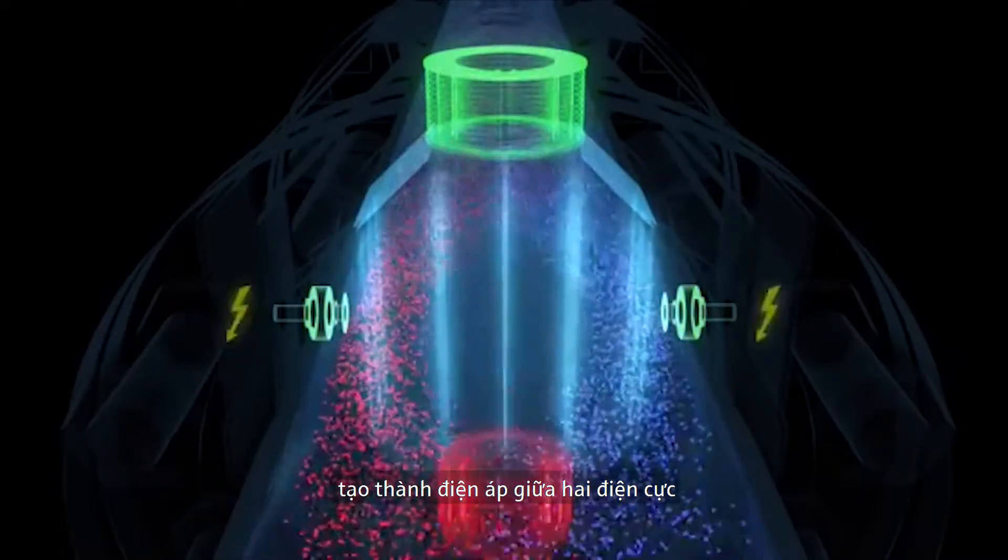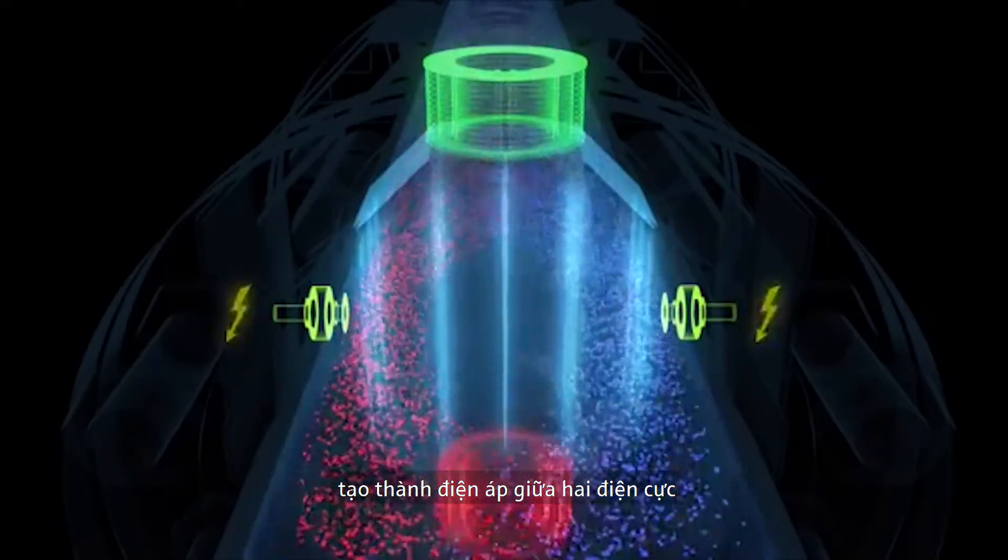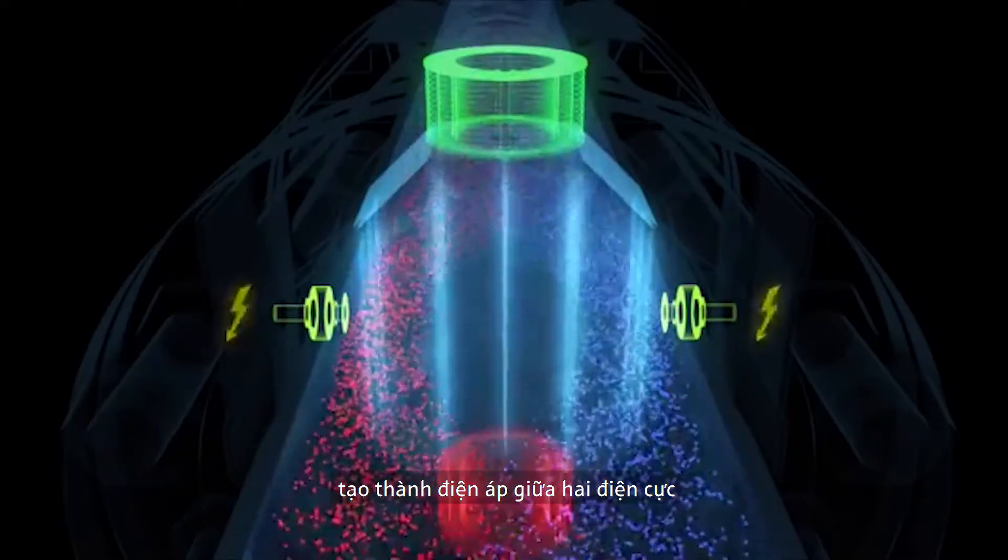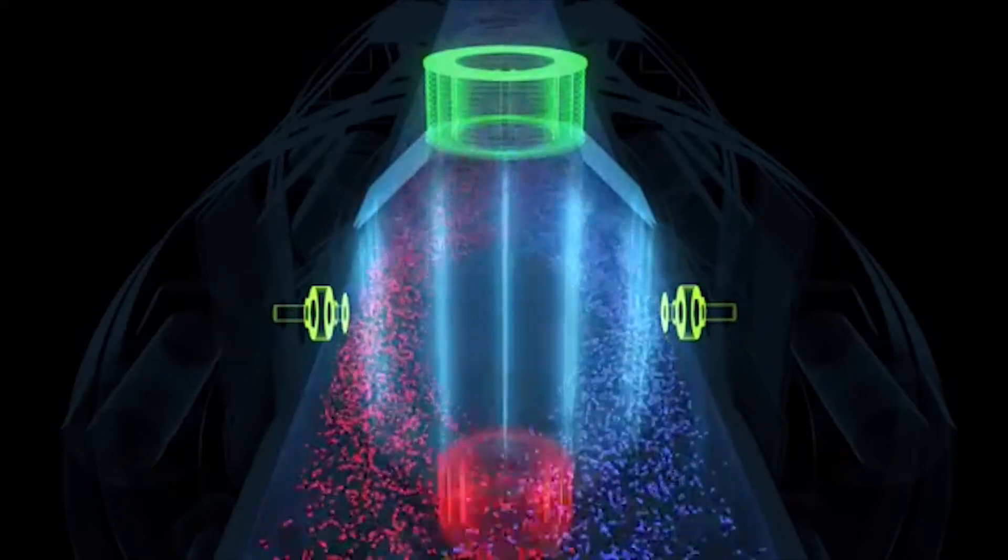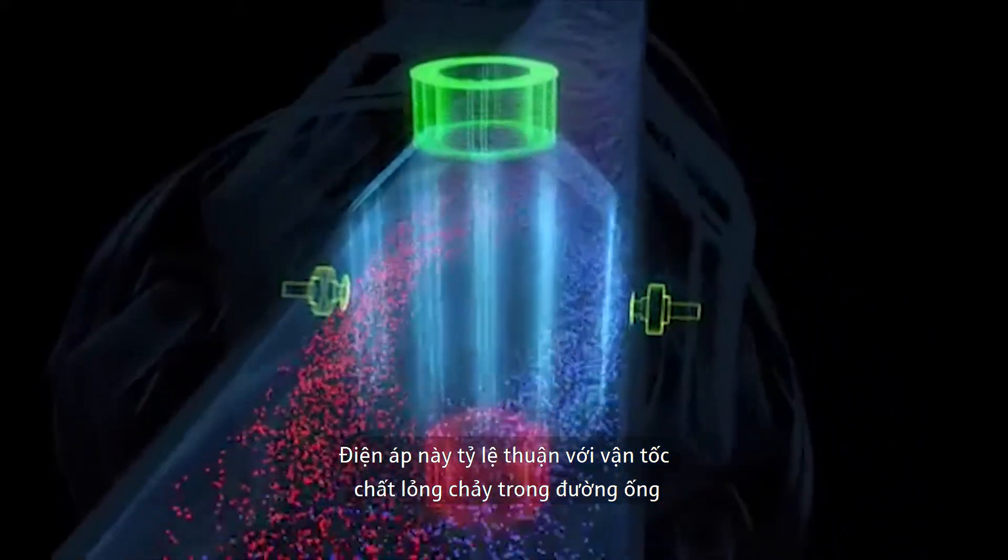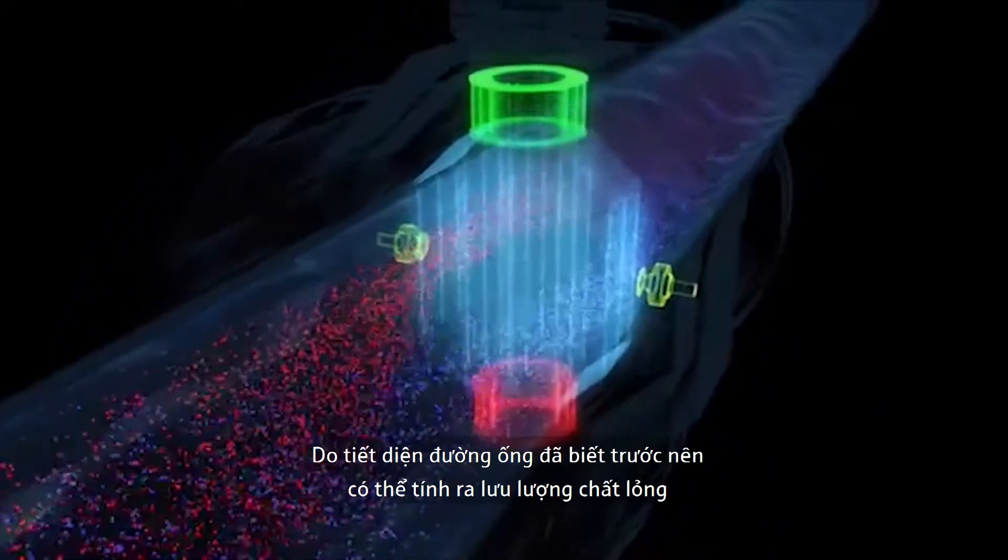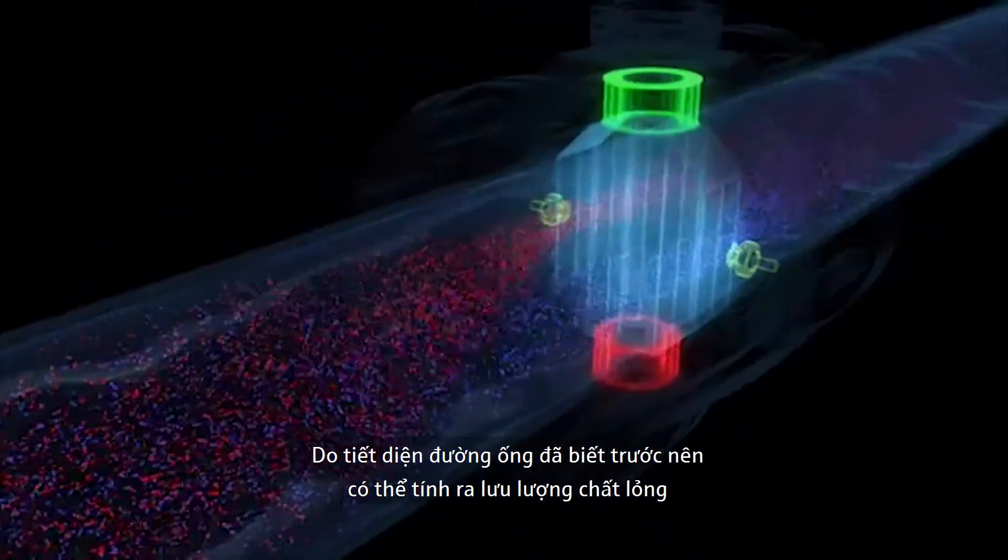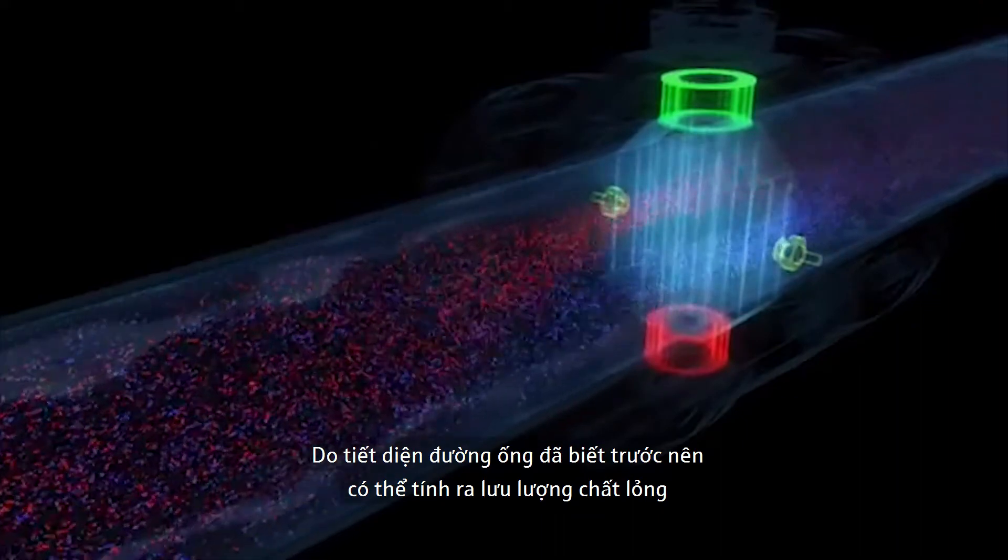Now an electrical voltage forms, which is detected and measured by the two electrodes. This voltage is directly proportional to the flow velocity in the pipeline. Together with the known tube cross section, the flow volume can be calculated.